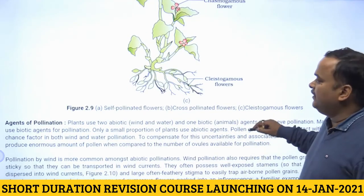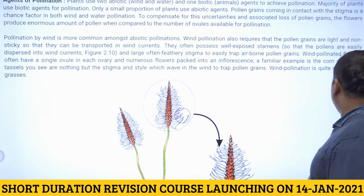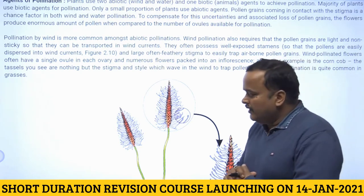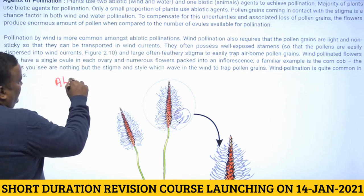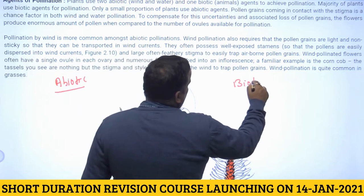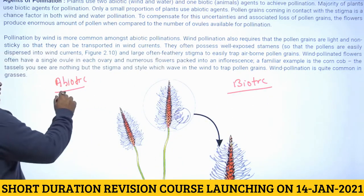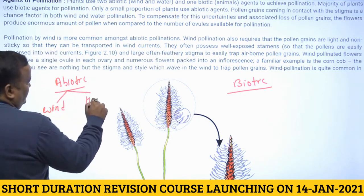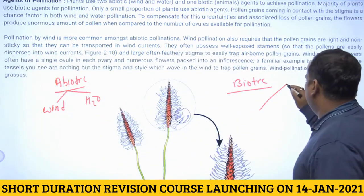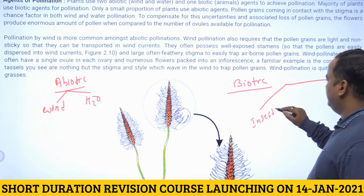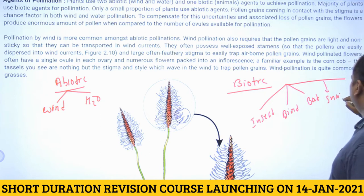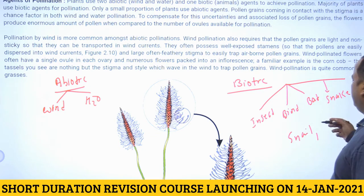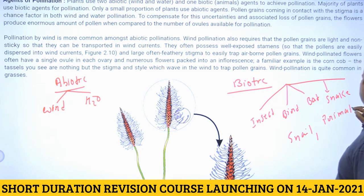Next is agents of pollination. Pollinating agents are broadly divided into two categories: abiotic and biotic. Abiotic agents include wind and water. Biotic agents include insects, birds, bats, snakes, snails, primates, reptiles, etc.